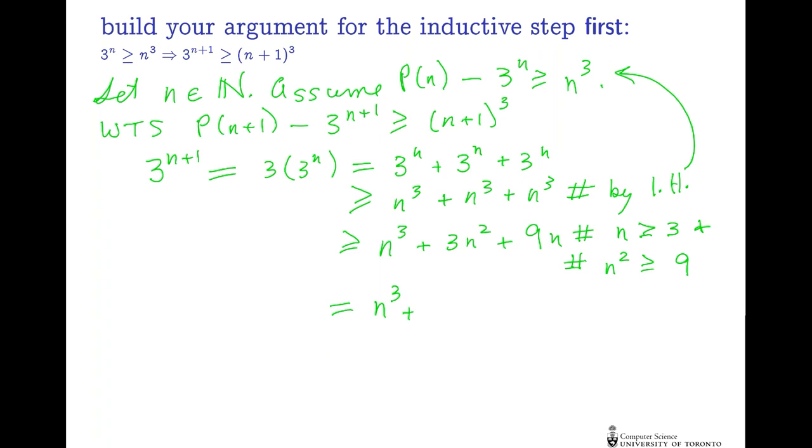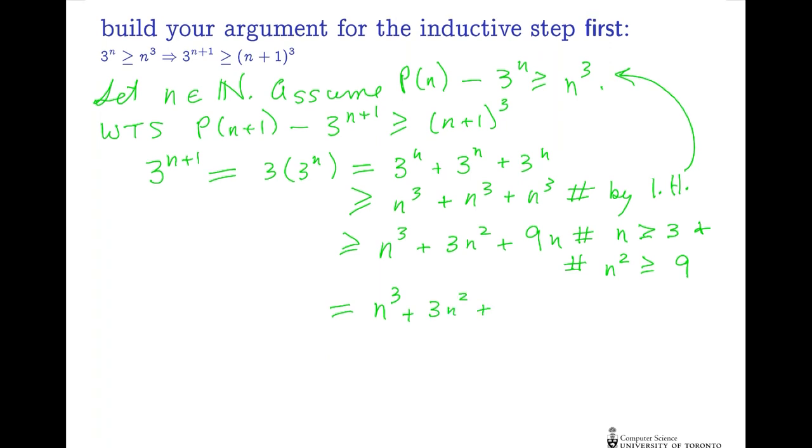That equals n³ + 3n² + 3n + 6n, just rewriting, which is greater than or equal to n³ + 3n² + 3n + 1, as long as n is at least 1/6, which is (n+1)³ by the binomial theorem.